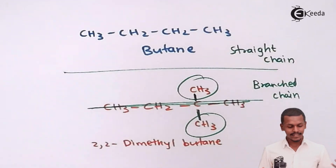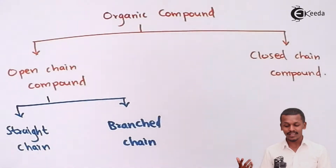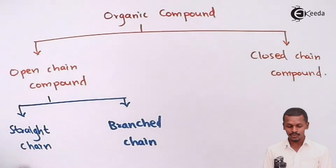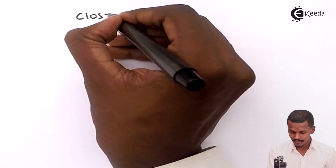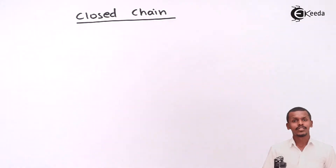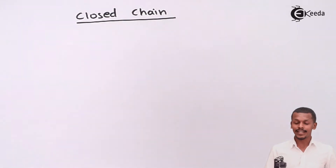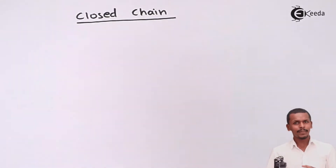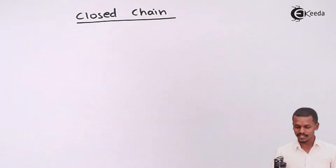Those are the two classifications for aliphatic organic compounds. Now the remaining part is to discuss the classifications under closed chain organic compounds. Let me do that separately so we can understand the different types of closed chain organic compounds. Closed chain organic compounds are basically divided into two parts: they can be homocyclic or they can be heterocyclic.